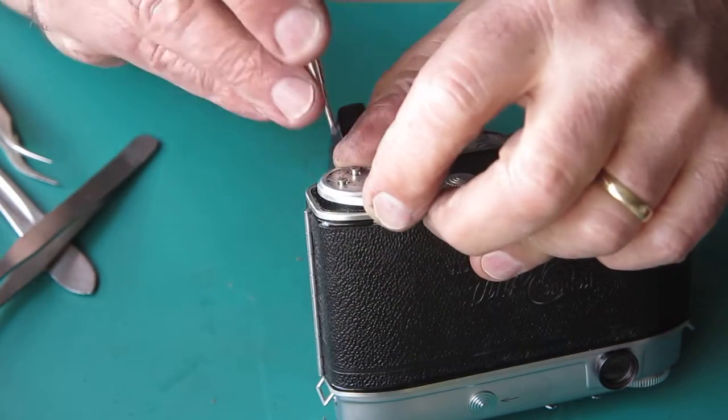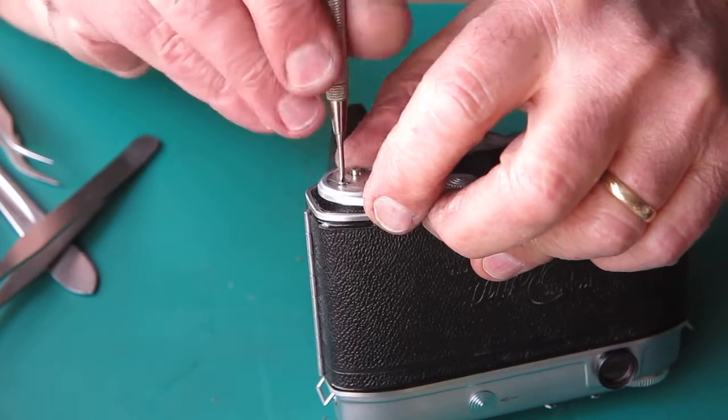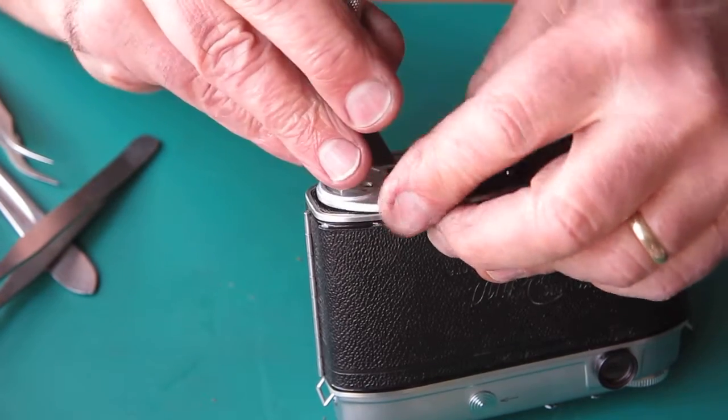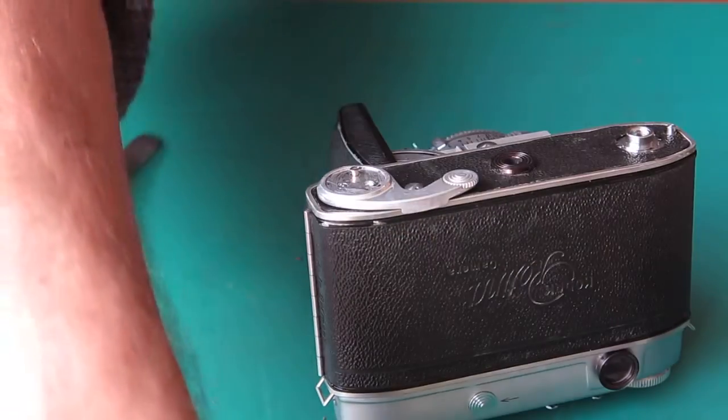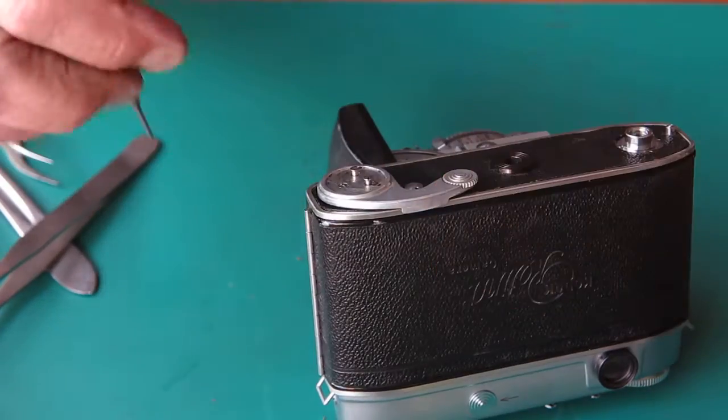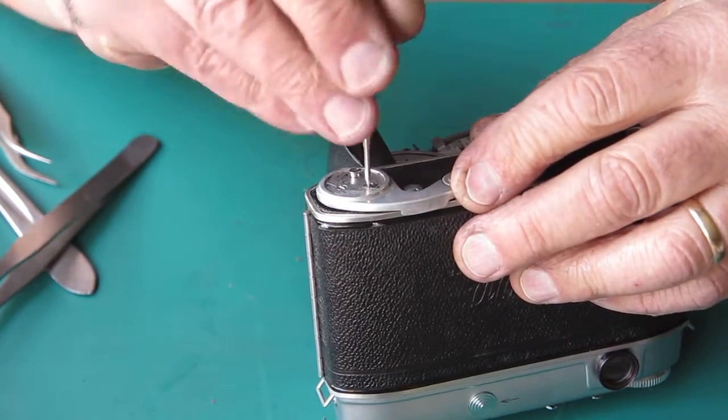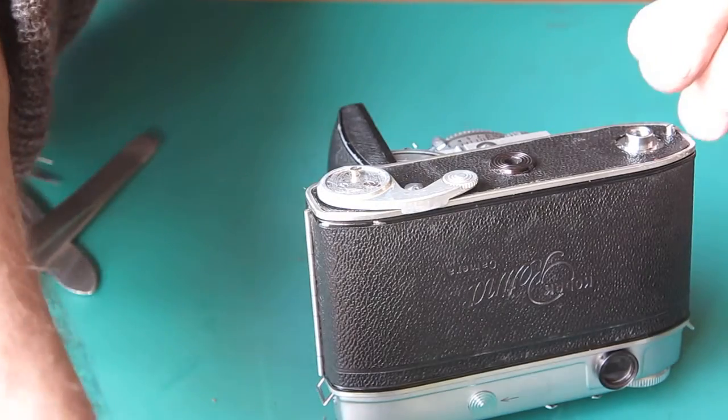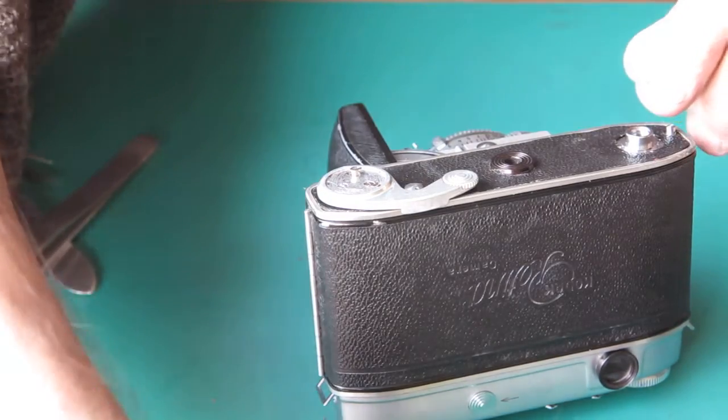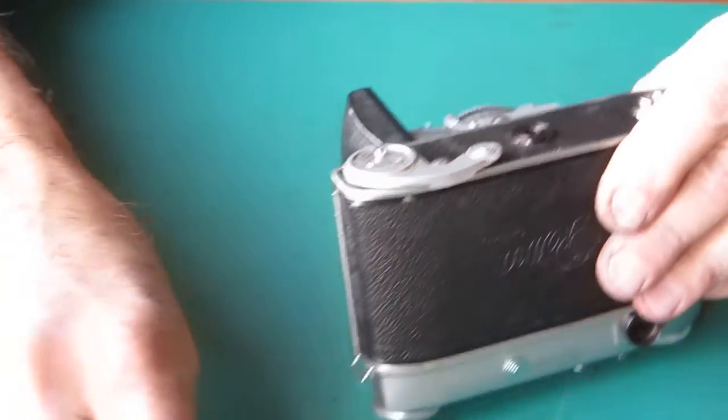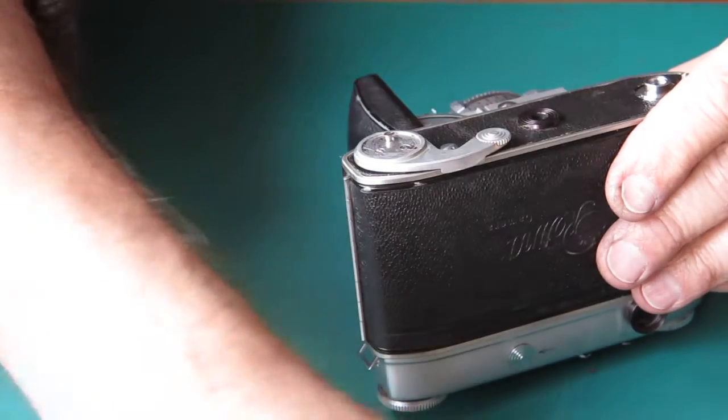So I'll put the film advance lever back on the camera. Where's the third screw? I was just busy saying that I haven't lost any screws.